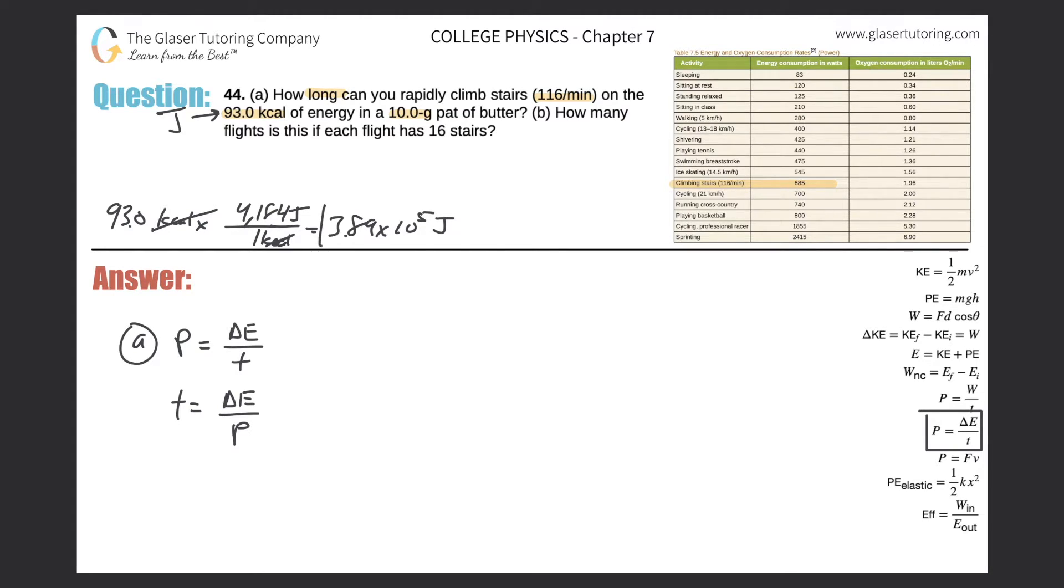That we are going to plug in for the numerator here. And then the power, they basically told it to us in the table. It says at the top here, energy consumption in watts. And to climb these stairs, we need a power output of 685 watts. So therefore, we now know the power. So we just plug it in. So it's not too bad.